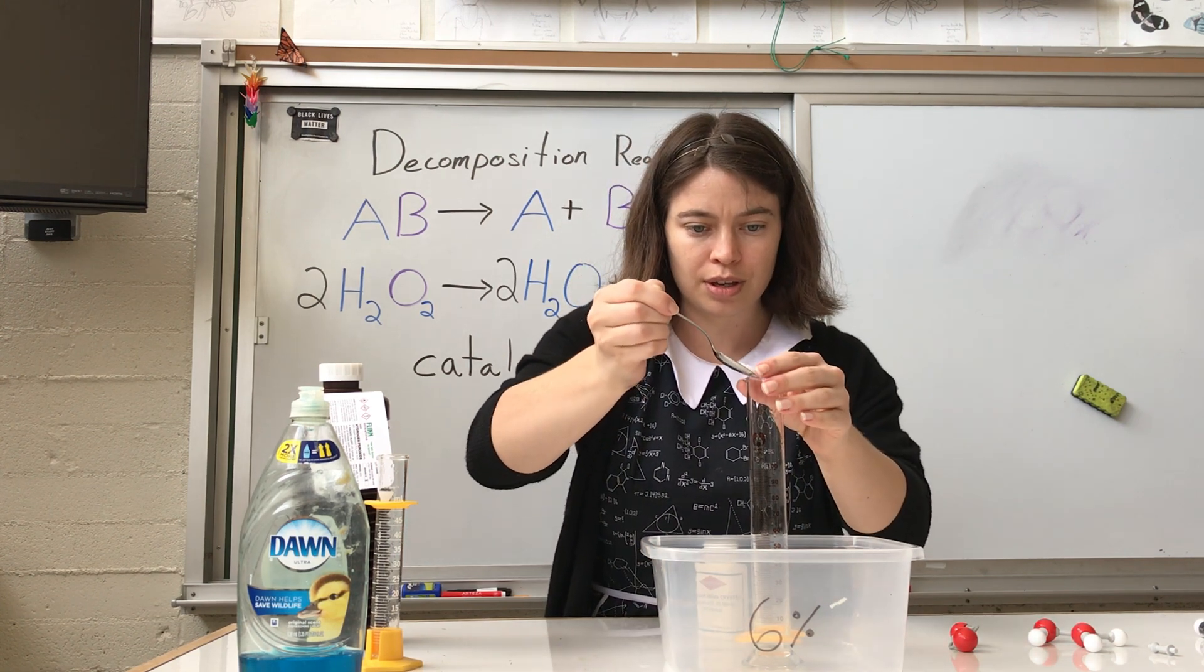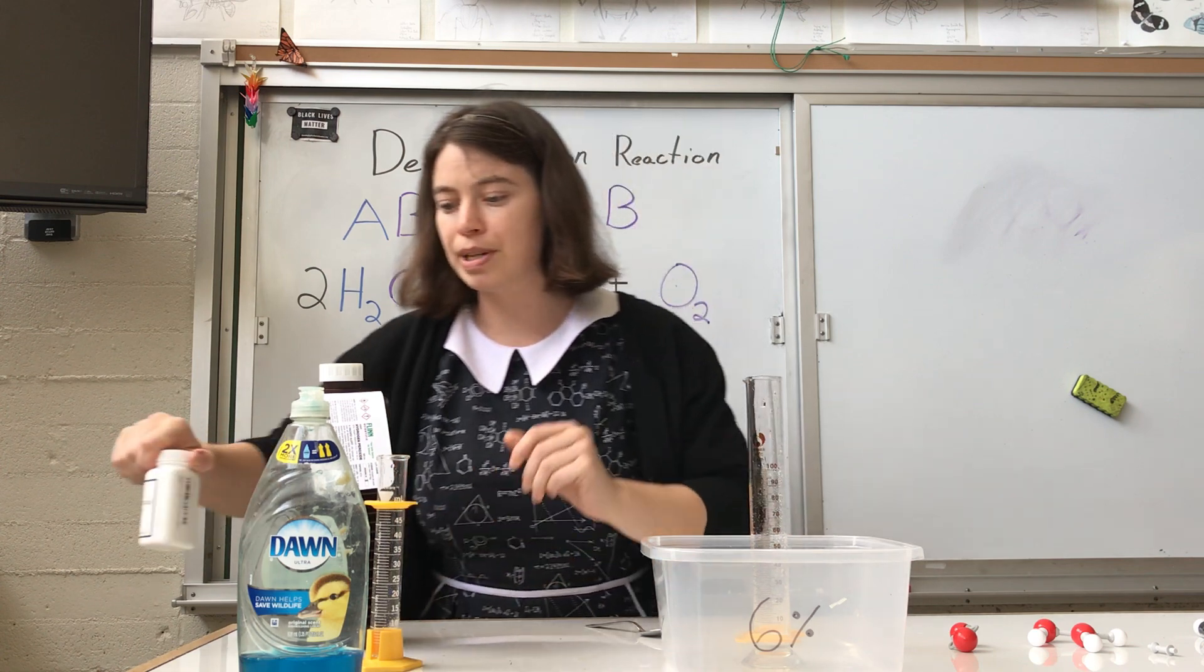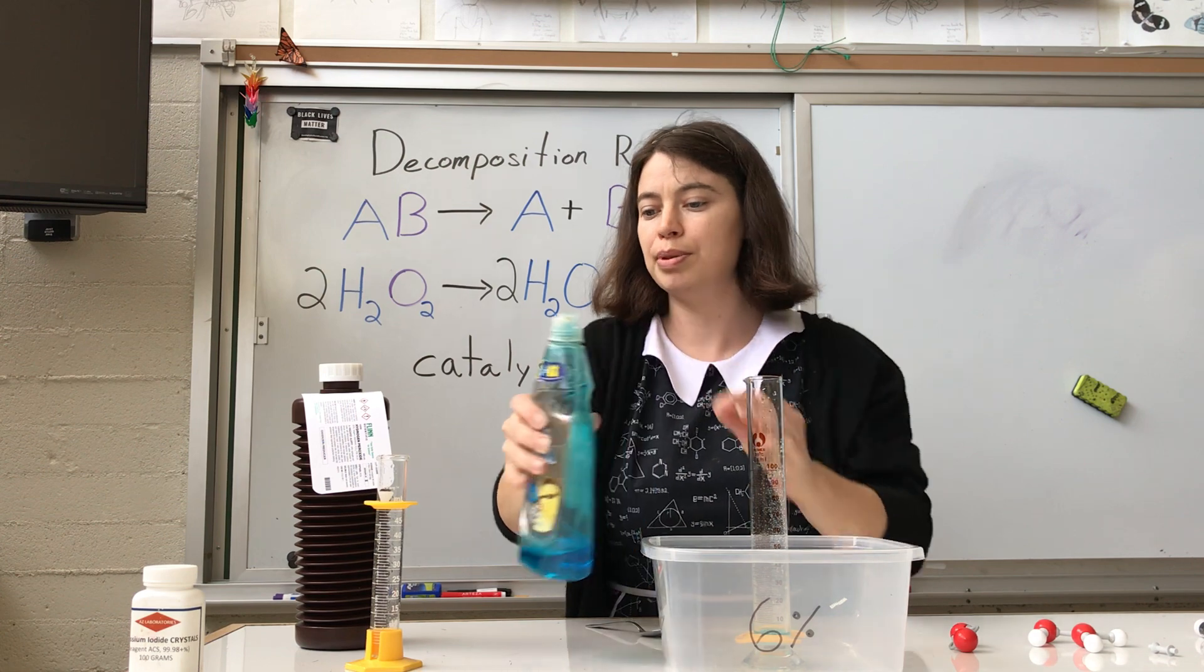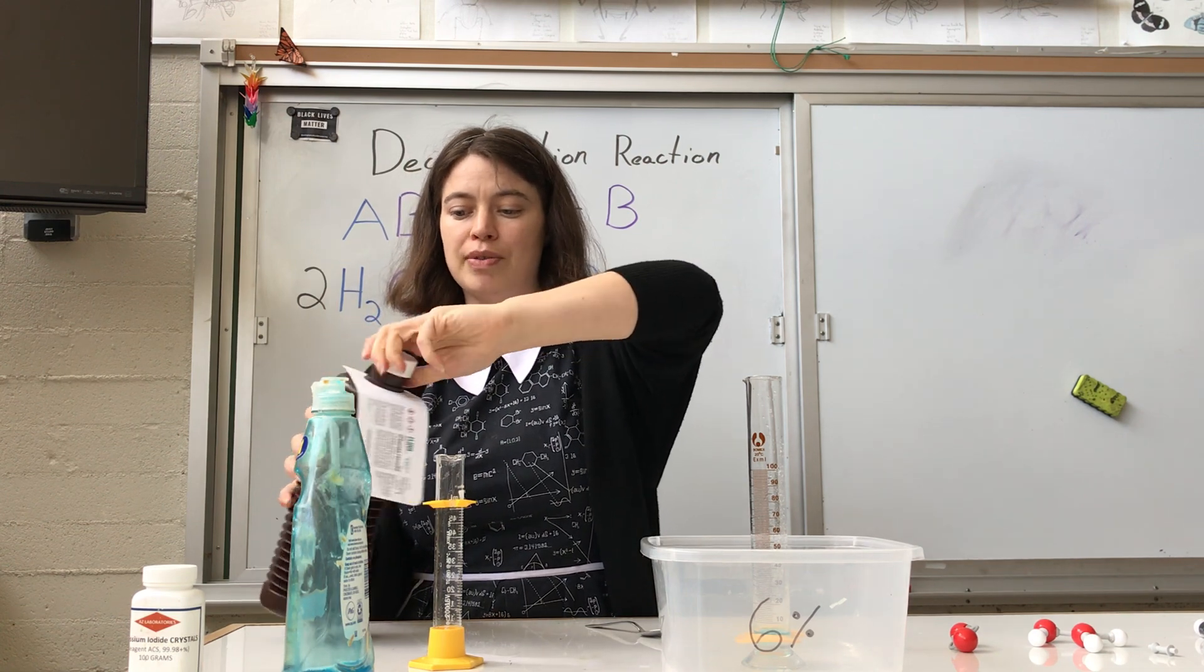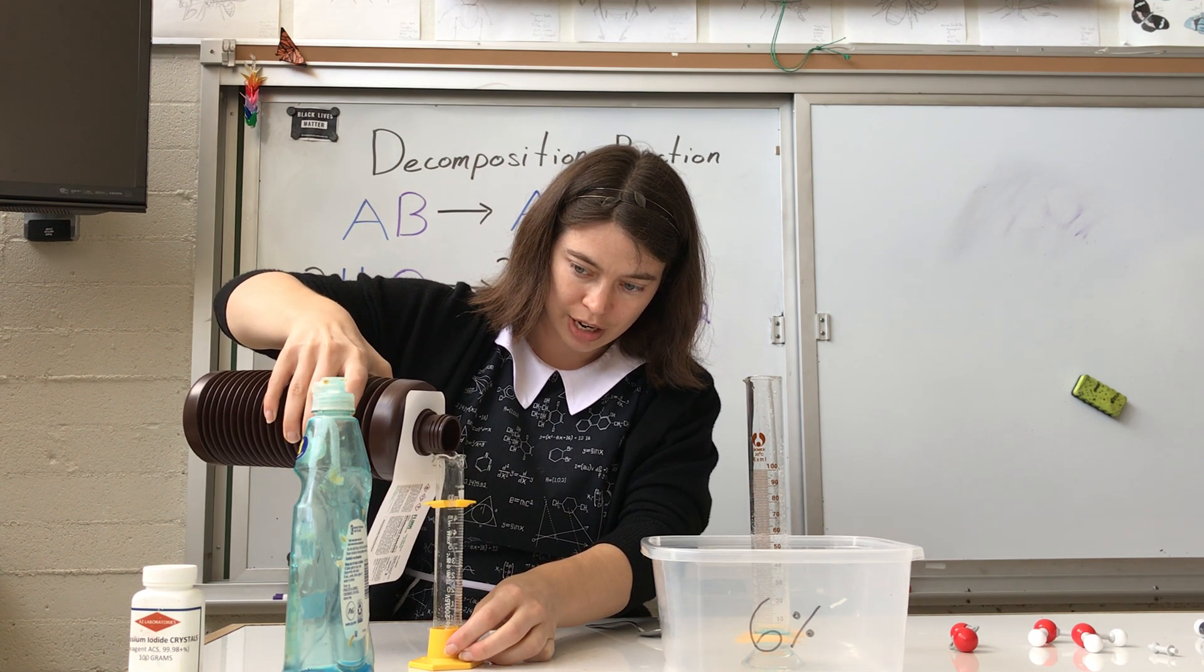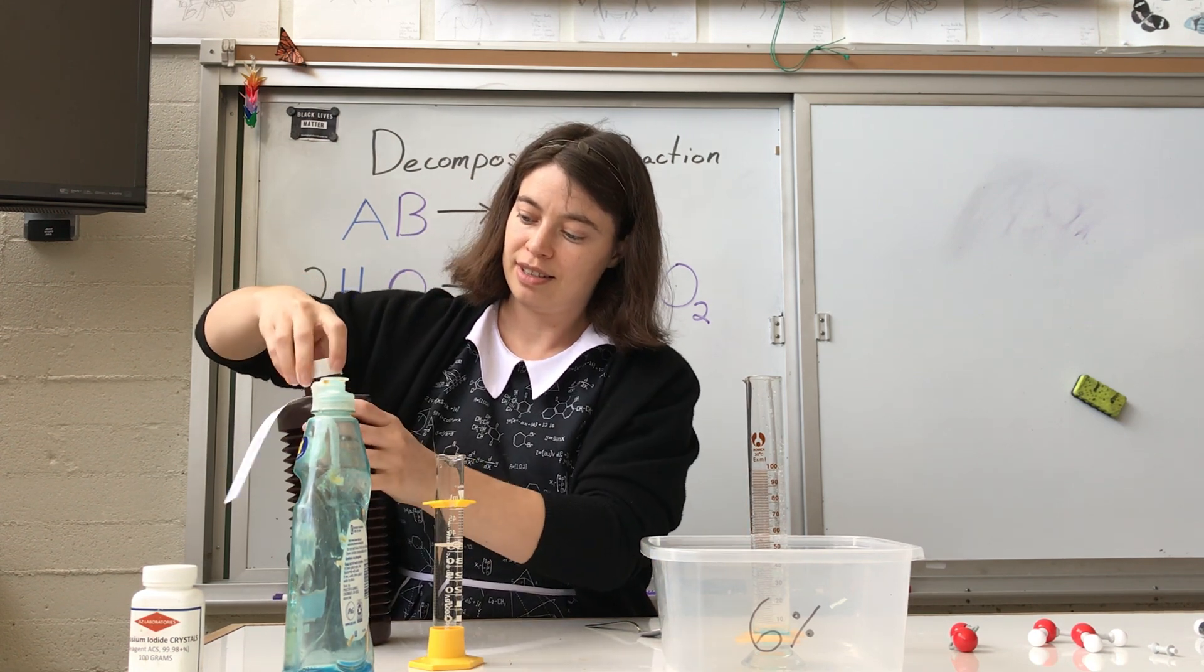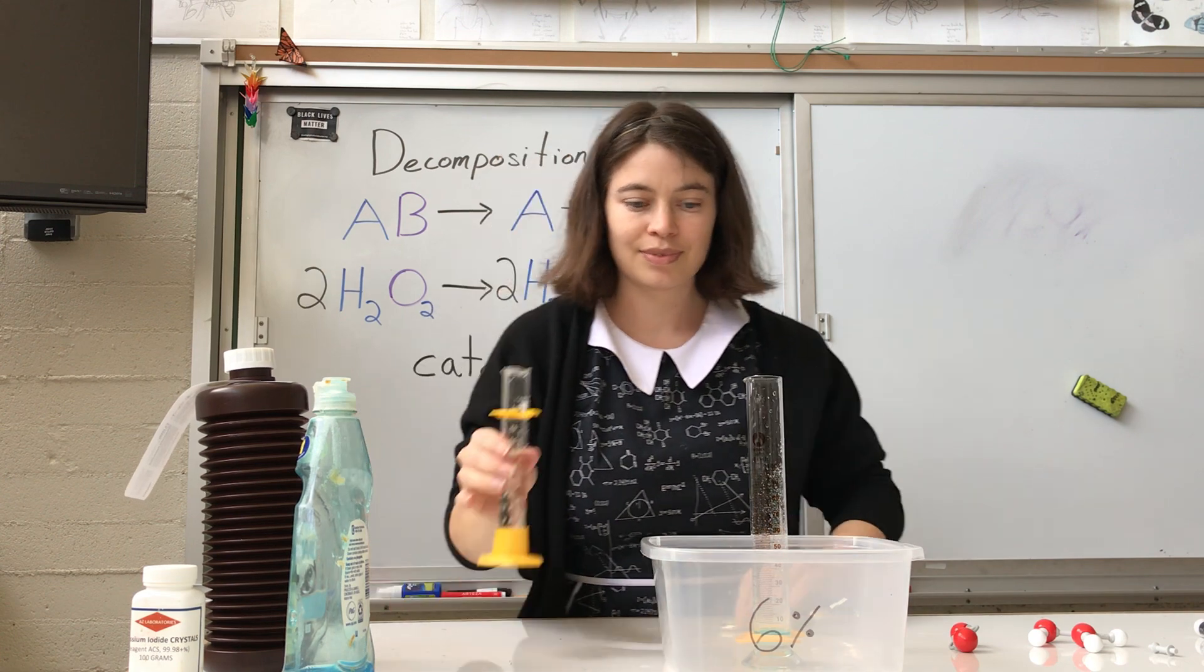So this is just going to go into the bottom of my container. And on top of that I'm going to put some dish soap. Again the dish soap is just to trap the oxygen gas so that we can see it as it's being produced. So I've got a little bit of dish soap. And then let's measure out about 30-35 milliliters of this hydrogen peroxide. So I'm going to take this very carefully pour it in until I've got the right amount. Maybe a little bit more than I need but it'll be fine.